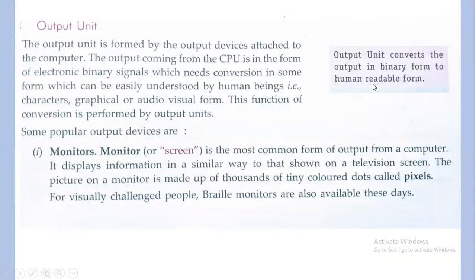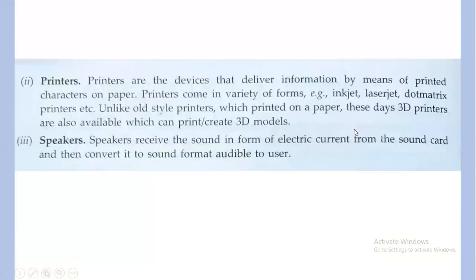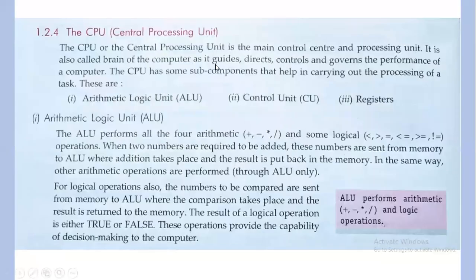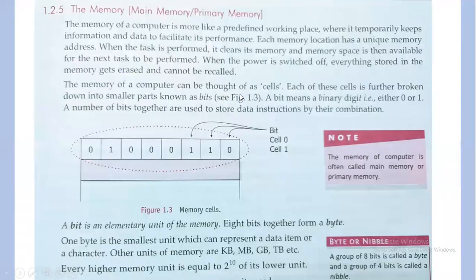Output units convert output from binary form to a human-readable form. Examples include printer, monitor or output screen, and speakers, since the sound you hear is basically an output form. The CPU is the main unit considered the brain of the computer. It has the ALU, CU, and registers. The ALU performs all arithmetic and logical operations, the CU controls all inputs and passes them to different components, and registers are memory associated with the processor.